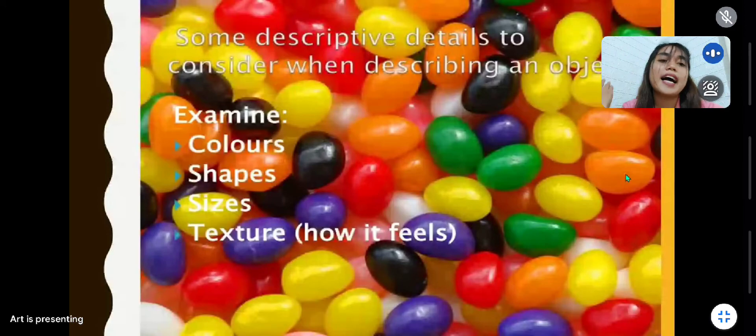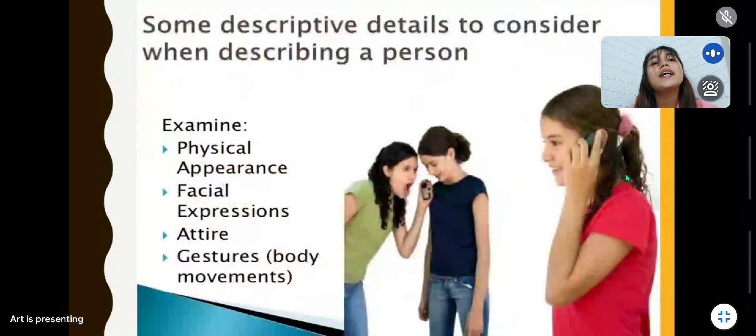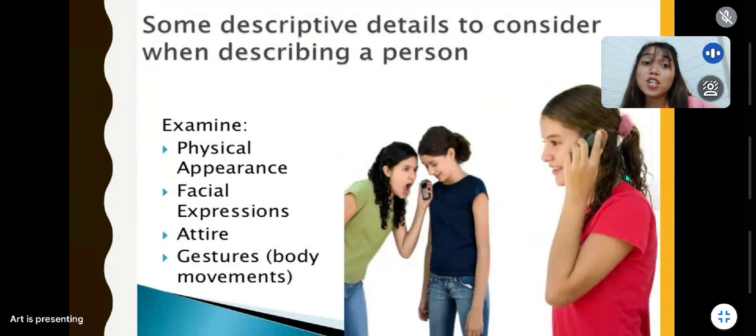Next one is when you are describing a person. These are some descriptive details to consider. You need to examine their physical appearance—how they look, if they are thin or fat—their facial expression, if they are happy or sad, their attire, the attire they are wearing, if it's classy, cool, old school, and of course their gestures or body movements, or how they move, if they move lively or gracefully.